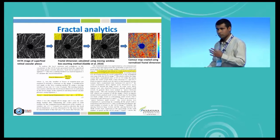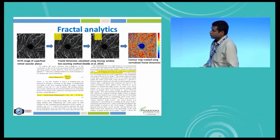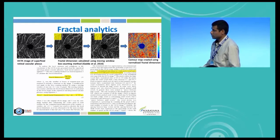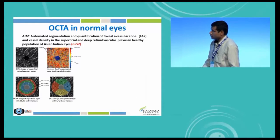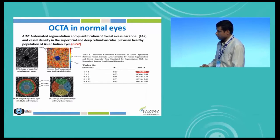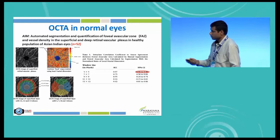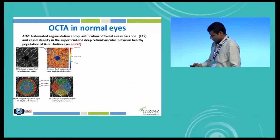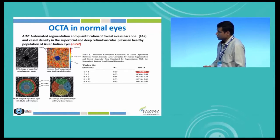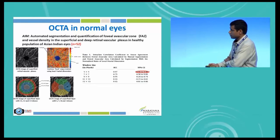What we basically use is local fractal analytics to understand the vascular density and the spacing between the vessels in these images. We have utilized this technique in several pathologies as well as in normals. Here is an example in normals where you can see that we have mapped the vascular densities in different zones of the retina.